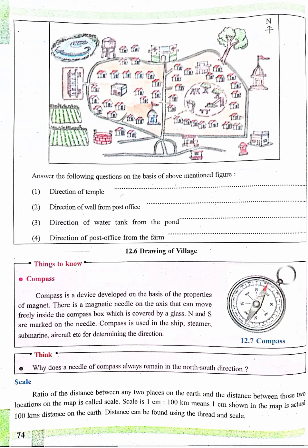The actual distance between any two places in the map can be known with the help of a scale used in the map. The scale 1 cm equals 100 km means the distance of 1 cm on the map is equal to actual distance of 100 km on the surface of the earth.